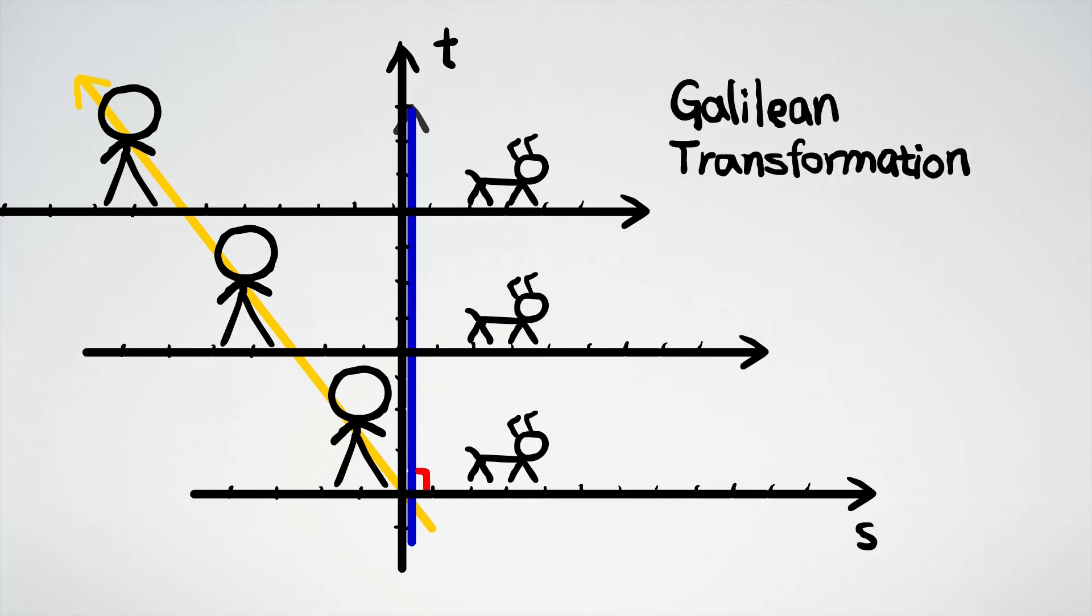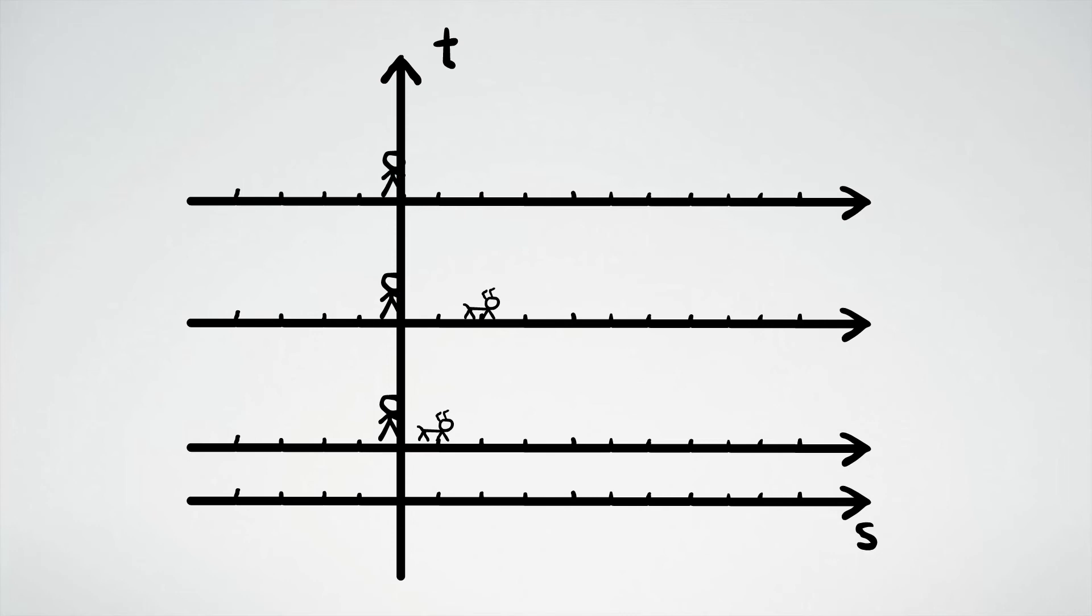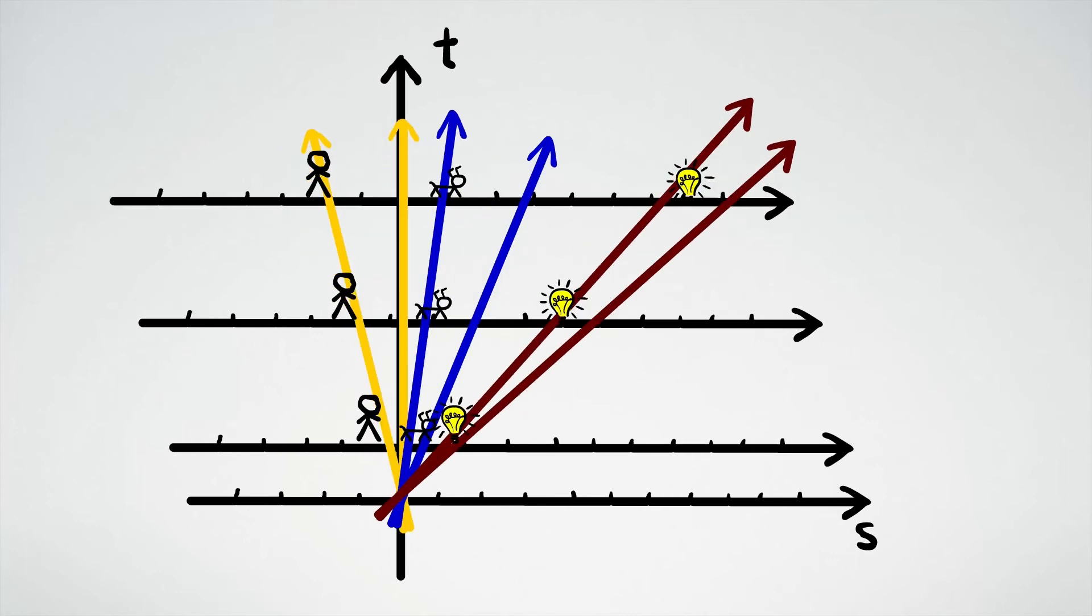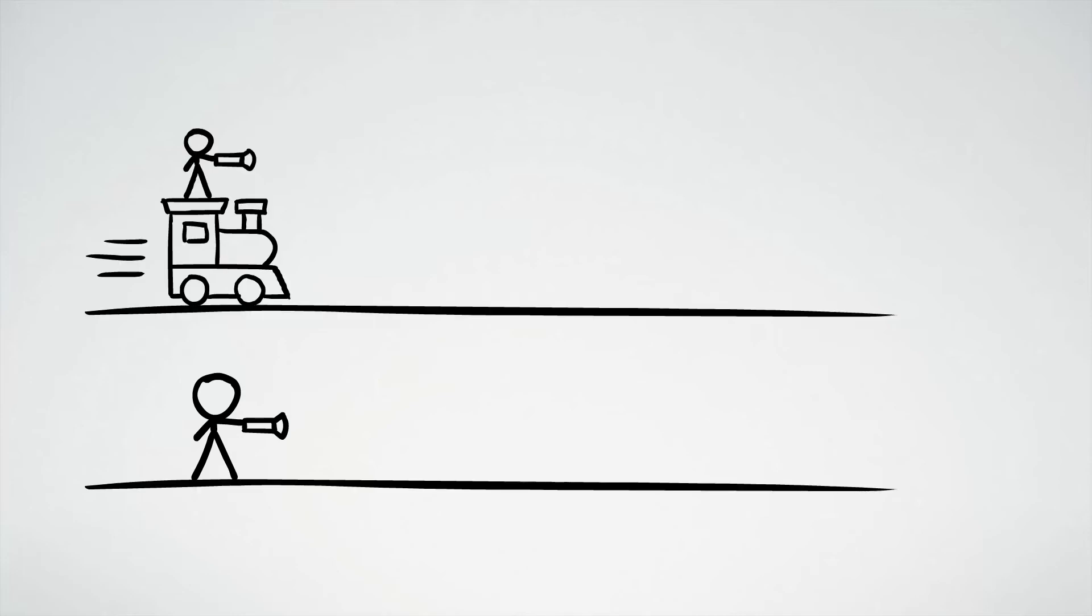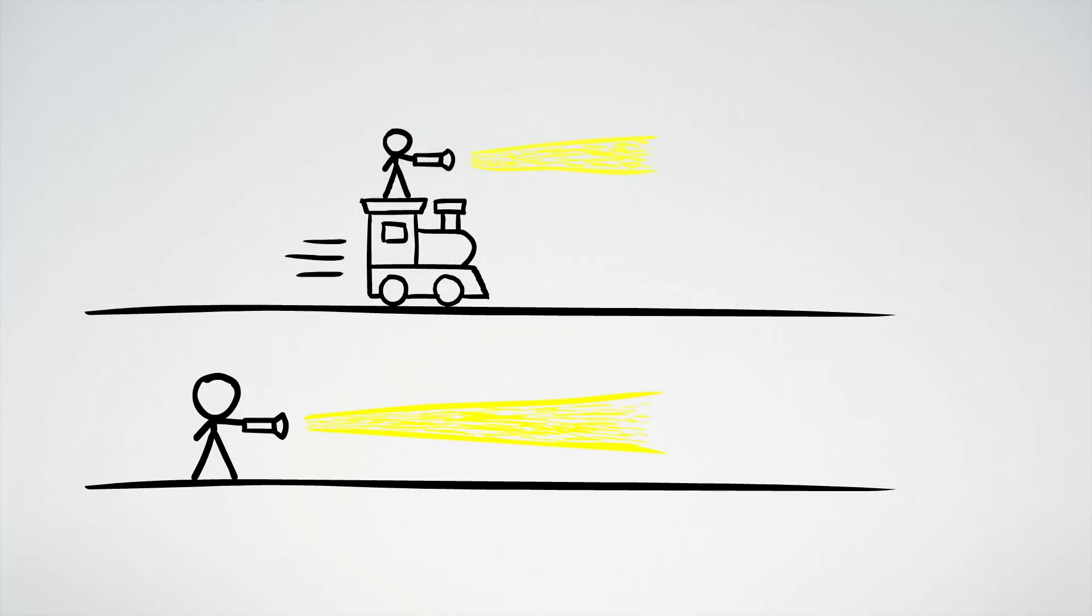It shifts the speed of all objects, including light, equally. No velocity remains unchanged after the Galilean transformation. However, physicists have built up tons of experiments to show that no matter the light is shot from a stationary person or a moving train, its speed relative to the ground is always the same.